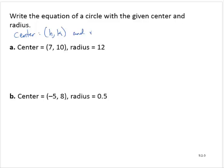and the radius as some number r, then the equation of the circle is (x - h)² + (y - k)² = r².